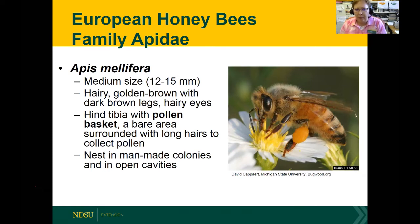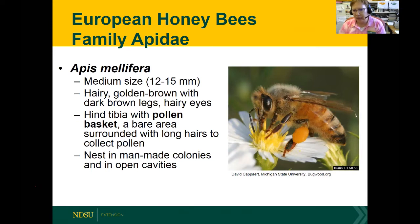North Dakota is number one in honey production, which surprises a lot of people. We produce about 33 million pounds of honey, valued at about $65 billion — it's a significant industry. Part of the reason is that we grow a lot of crops like canola and sunflower that bring migratory beekeepers into North Dakota. Another value of honeybees and other bees used for pollination is their pollination services for crop production, valued at $14 billion in the U.S.